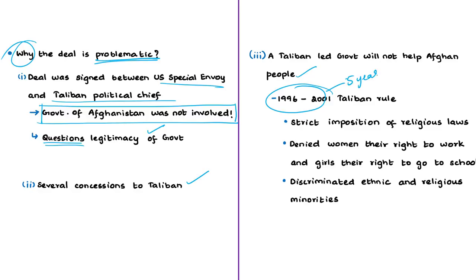The Taliban ruled Afghanistan roughly from 1996 to 2001, a period known for strict imposition of religious laws that denied women the right to work and girls the right to education. Women were banished from public life, schools were shut down, and ethnic and religious minorities were highly discriminated against. If the same Taliban comes to rule again, it is very unlikely it will respect civil liberties or accept the Afghan constitution, as these were not discussed in the deal.